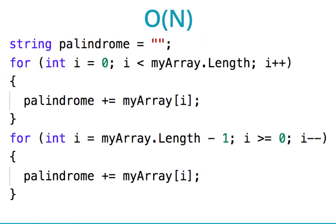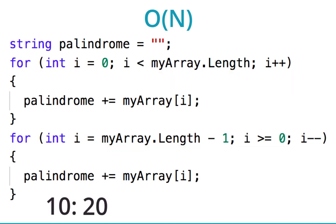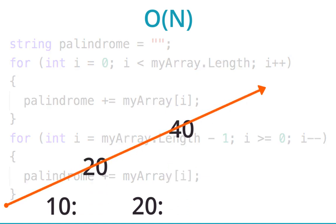Let's look at another example of order N. In this example, there are two loops, one after the other. The first loop counts through the array from beginning to end, and the second loop goes back from end to beginning. So if there are 10 items in the array, there are a total of 20 iterations — 10 for each loop. If there are 20 items, then there are 40 loop iterations. This is still considered order N because it follows a straight line on the graph. When the array size doubles, the total operations doubles. The exact number of loop iterations is not what matters — what matters is the speed at which it increases as the array gets bigger.